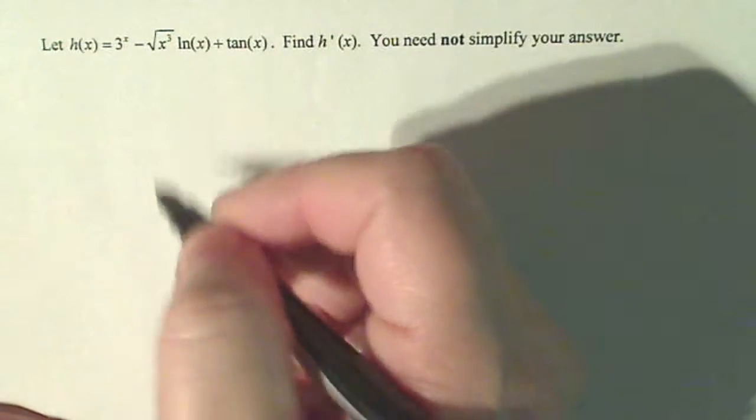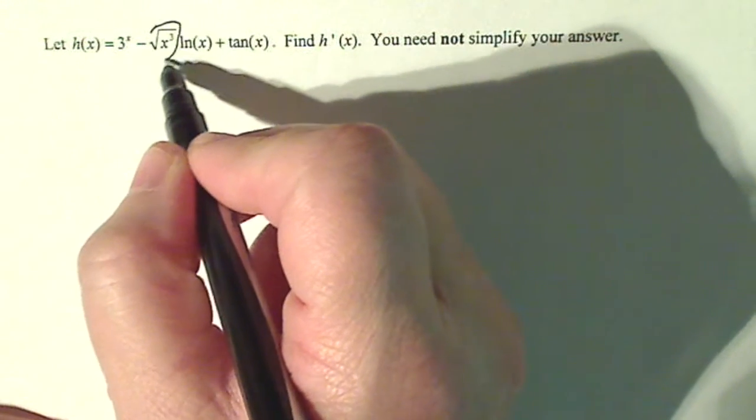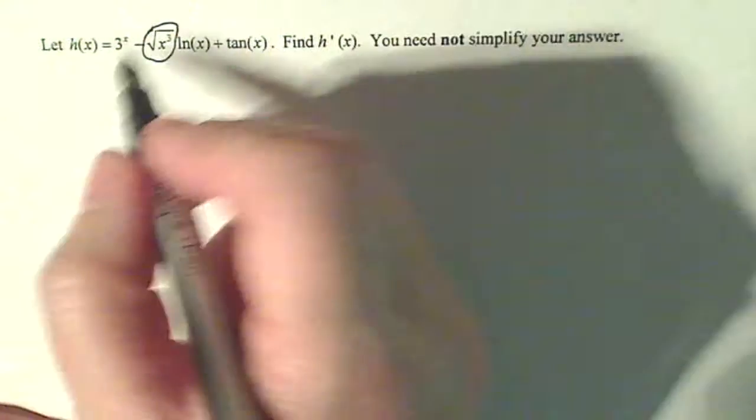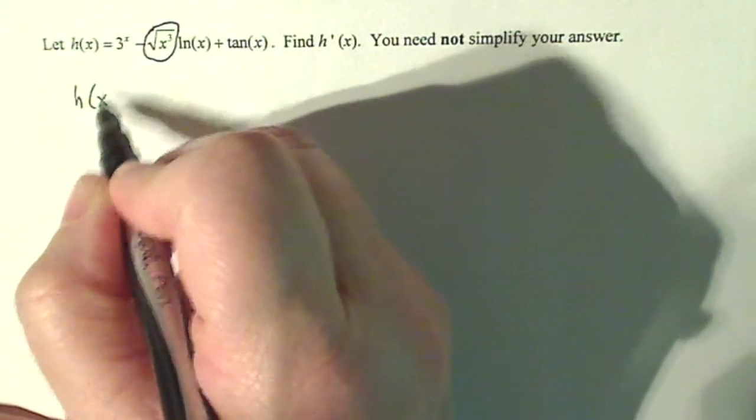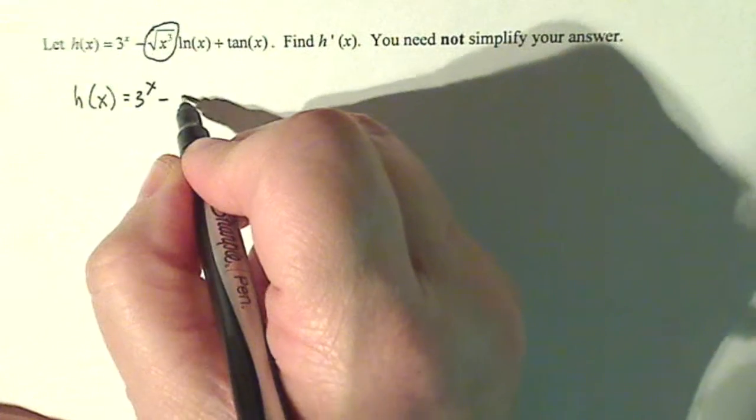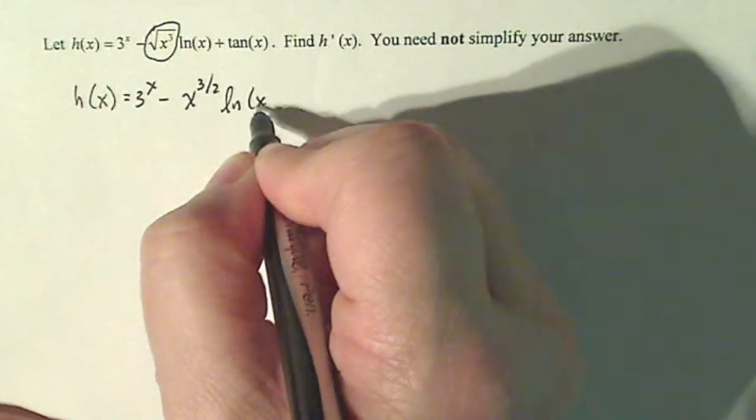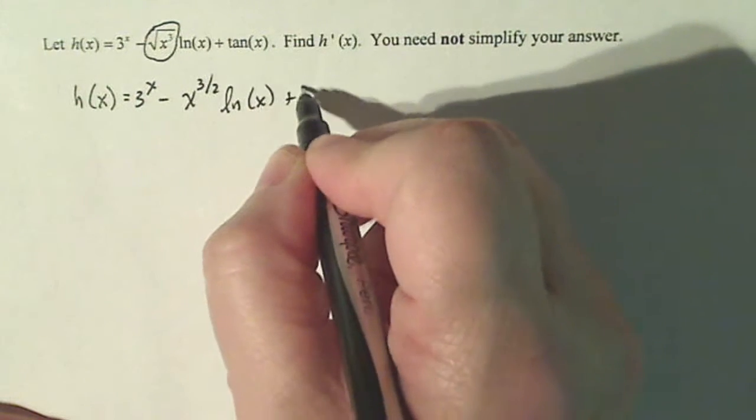Okay, well the first thing I do here is I'm gonna rewrite this term right here so I can use the rules easier. So h(x) is gonna be 3 to the x minus x to the three halves times natural log of x plus tangent x.